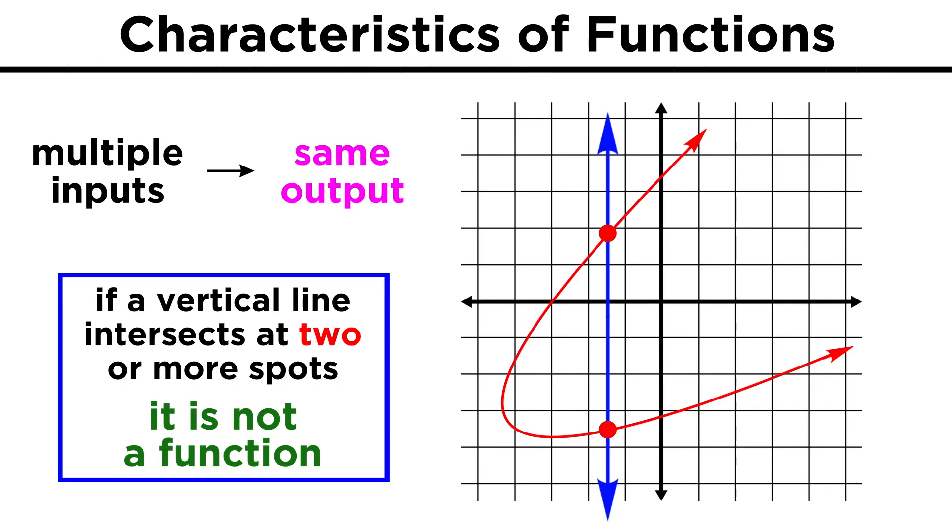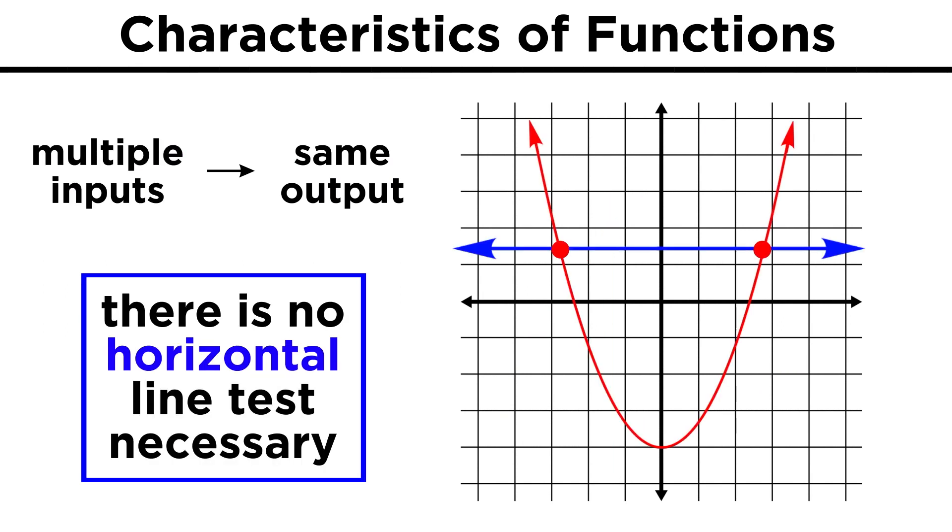We can, however, have the same output for multiple inputs, which is why different x values are permitted to produce the same value for the function, so there is no horizontal line test necessary.